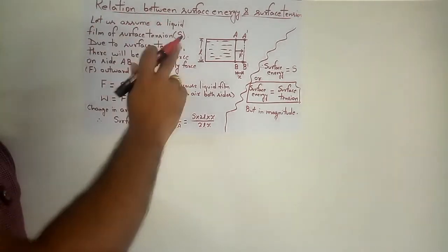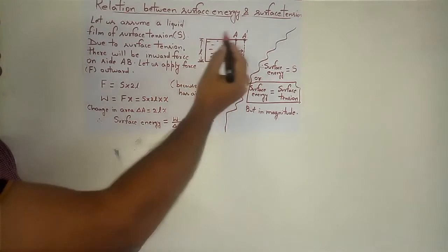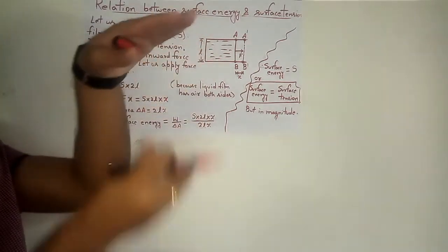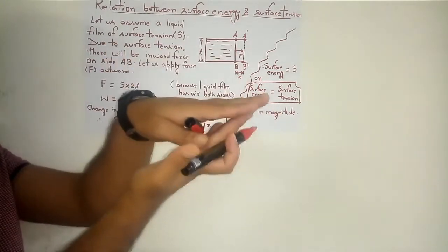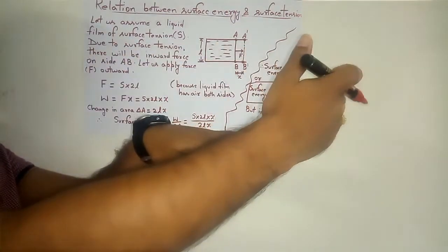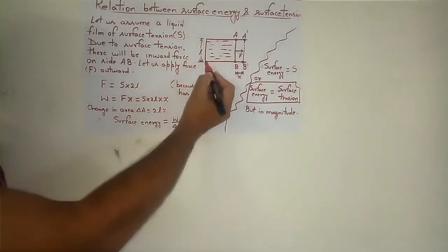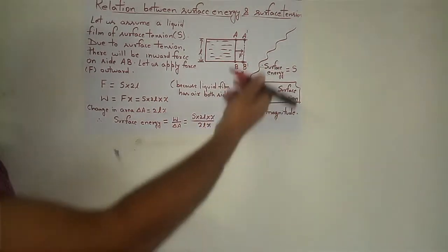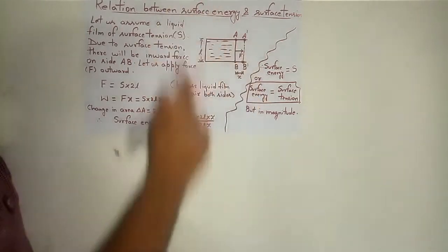This is the relation between surface energy and surface tension. For this purpose, you will have to take a film inside a frame. This film has air on two sides — an upper layer and a lower layer. Because the film is in contact with air on both sides, this surface will have an inward force from two sides. The length of this frame is AB on one side and A'B' on the other. Surface tension will apply force inward, but we will pull this frame outward by applying force F.